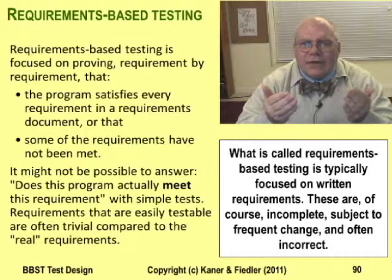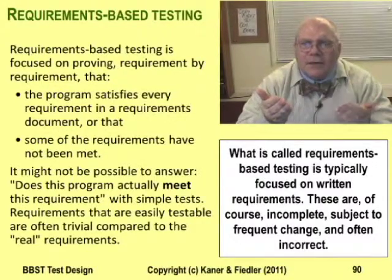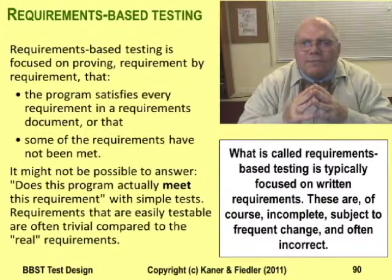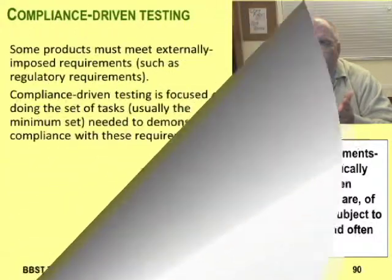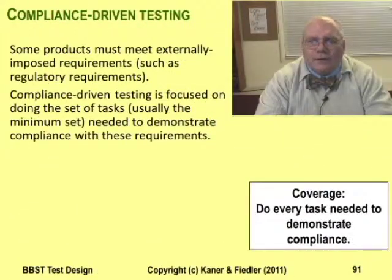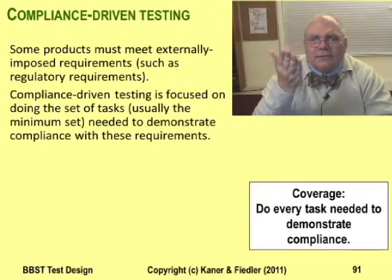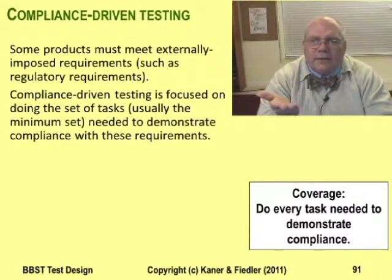Human needs are subjective, complex, ambiguous, and profoundly influenced by other needs and how well they're being satisfied. It's life. If you want to verify that the program complies with something like a standard, you have to make a list of everything that has to be verified, and then work through the list.